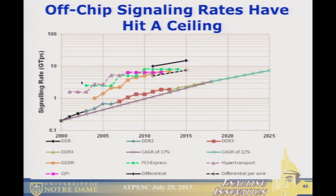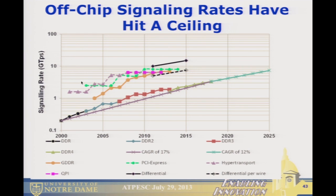There is experimental work with differential signaling that may give you something more, but it requires two wires, so on a per-wire basis it's in the same range. To a first approximation, most of the interfaces we're dealing with look like they're pretty much tapped out — they're not going to get any faster on a per-wire basis.